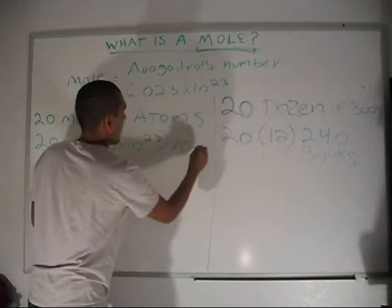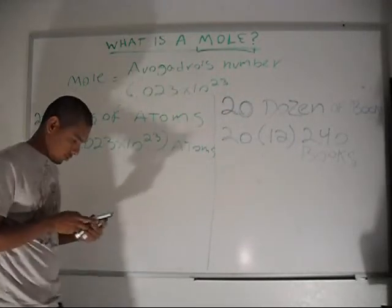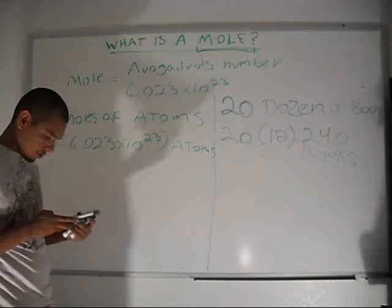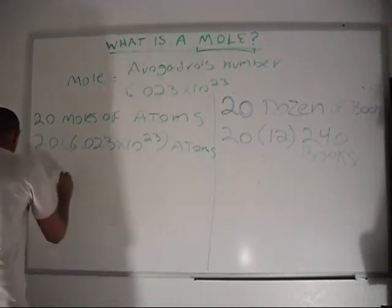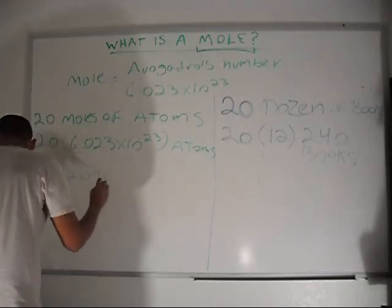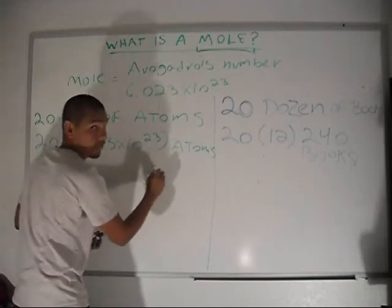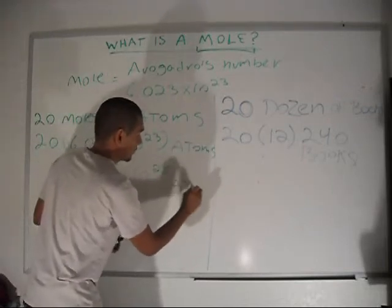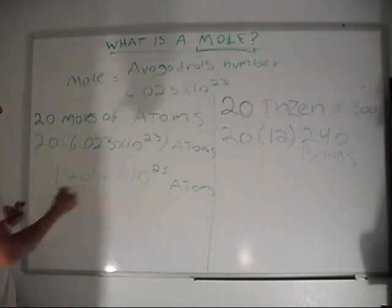And you get the amount of atoms. Which in this case is equals to 20 times 6.023 times 10 to the 23 equals to 1.2046 times 10 to the 25 atoms. So that's what it is.